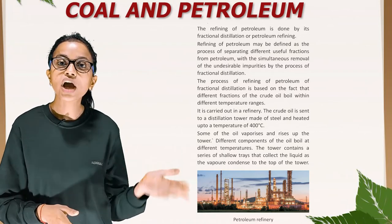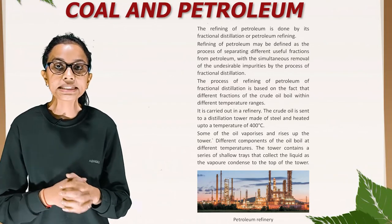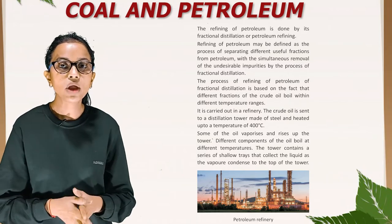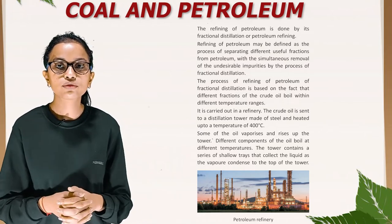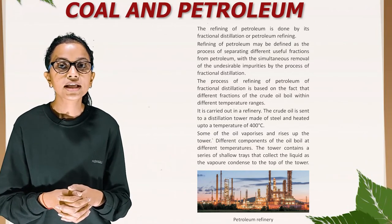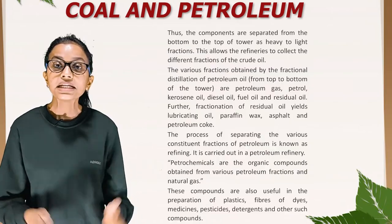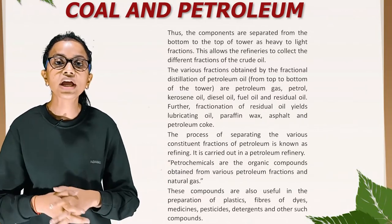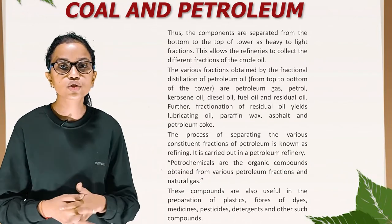Refining is carried out in a refinery. The crude oil is sent to a distillation tower made of steel and heated up to a temperature of 400 degrees Celsius. Some of the oil vaporises and rises up the tower. Different components of the oil boil at different temperatures. The tower contains a series of shallow trays that collect the liquid as vapour condenses towards the top of the tower. Thus, the components are separated from the bottom to the top of the tower as heavy to light fractions, allowing refineries to collect the different fractions of the crude oil.